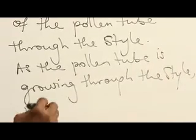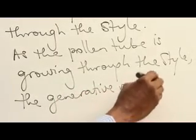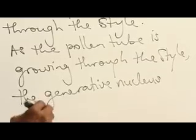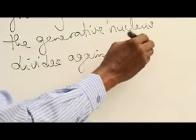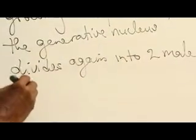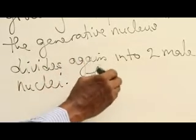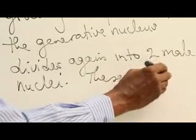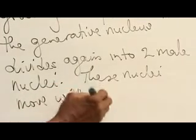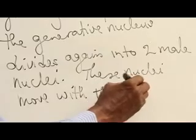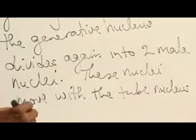The generative nucleus divides again into two male nuclei. These nuclei move with the tube nucleus along toward the ovary.